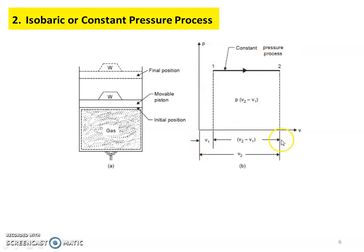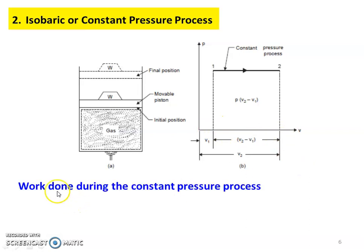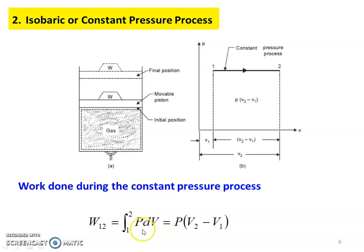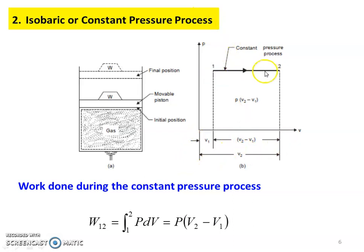In the constant pressure process, P1 equals P2, and volume changes from V1 to V2. Work done during constant pressure: W = ∫P dV. Since pressure is constant, this equals P × (V2 − V1). In the PV diagram, the area of the rectangle has width (V2 − V1) and height P, so work done = P(V2 − V1) in Joules.